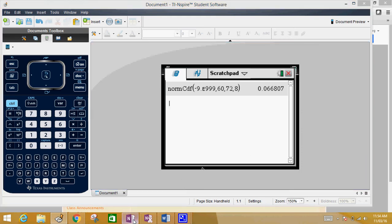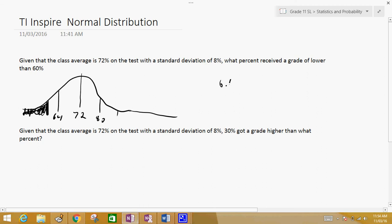So 6.68%. This means that roughly 7% of the people would get a grade of 60 and lower. Another kind of question you would be given is, for instance, the second one where we still have the mean is 72 and the standard deviation is 8, but this time we're actually given the area. We're given that 30% got a grade of higher than some number.